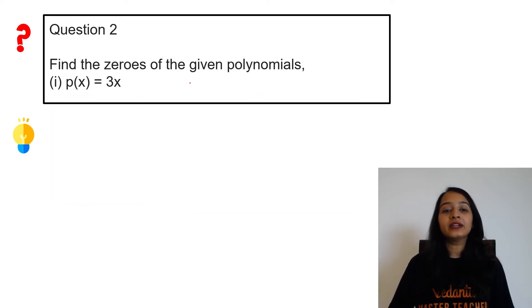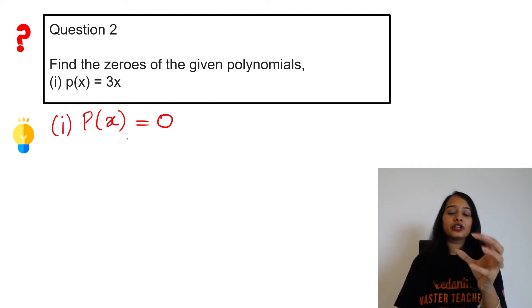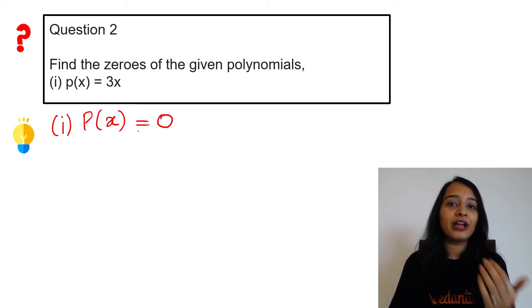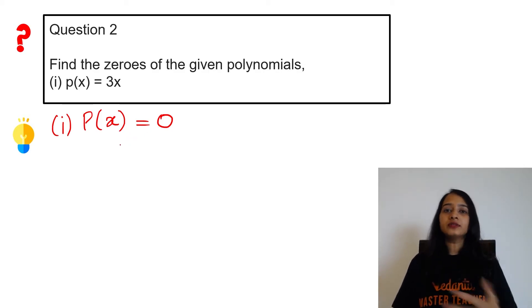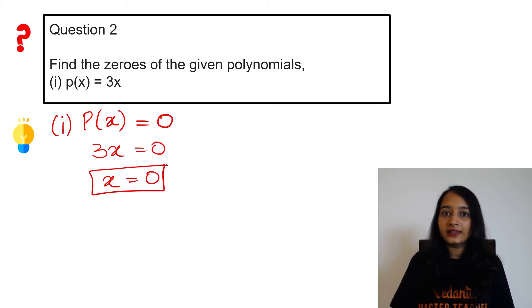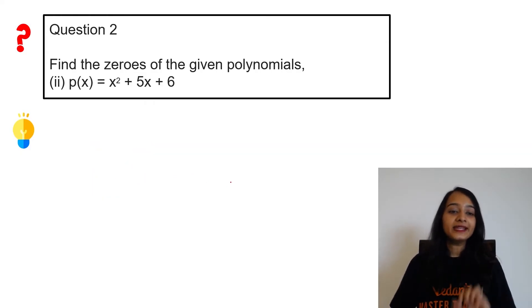Find the zeroes of the given polynomials. Question number one. Zeroes of the polynomial is when p(x) becomes equal to zero. Then you can say that the particular value of x when you substitute is the zero. So p(x) = 3x. When p(x) equals zero, 3x = 0, so x = 0 is the zero of the polynomial.